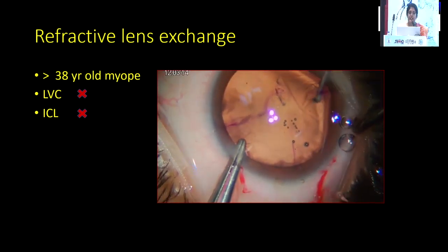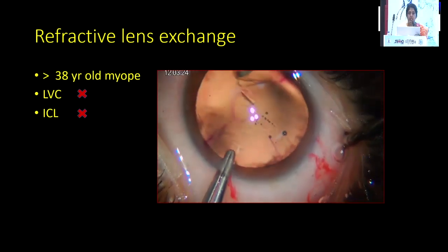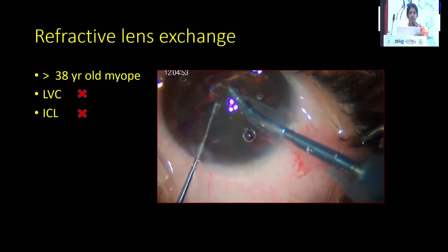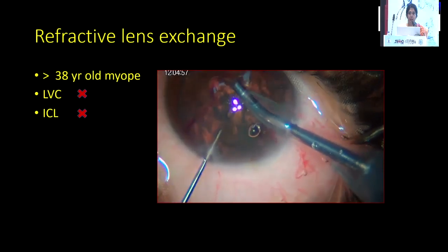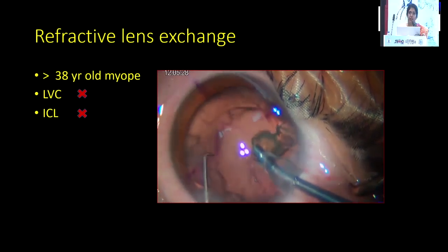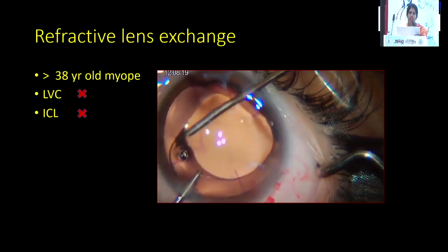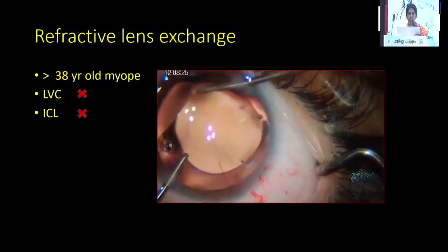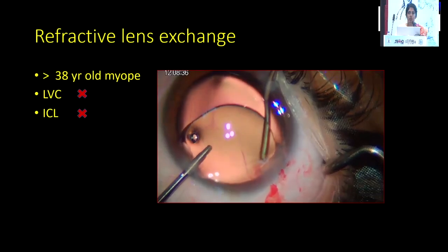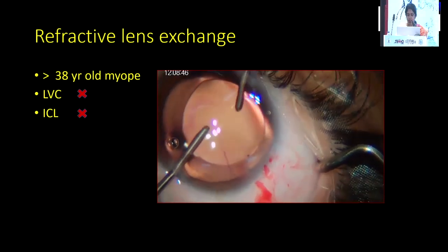Coming to the option of refractive lens exchange: wherever it's not feasible — for example, in an older myope with a minus four diopter correction going to a plus three diopter correction, there is a huge range and a lot of abrasions induced — it's better to go for refractive lens exchange. It's also preferred where laser vision correction is not possible, where ICL is not an option due to small white-to-white diameter or small anterior chamber depth, and in high myopes with greater risk of retinal detachment.